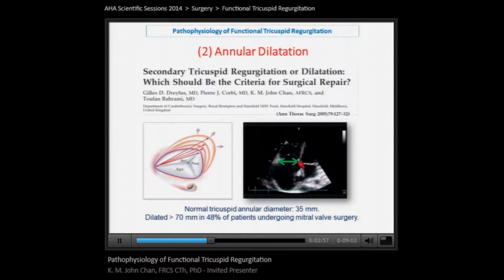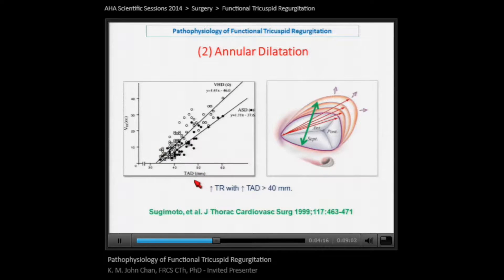This is different from the echocardiographic assessment, which Dr. Sarana will discuss in the next lecture. In the four-chamber view, the measurement taken goes approximately from the middle of the septal annulus to the middle of the anterior annulus, and it is considered dilated when more than 40 millimeters. This study shows that as the tricuspid annulus dilates beyond 40 millimeters, the volume of tricuspid regurgitation increases significantly — which is where the 40-millimeter threshold has come from.